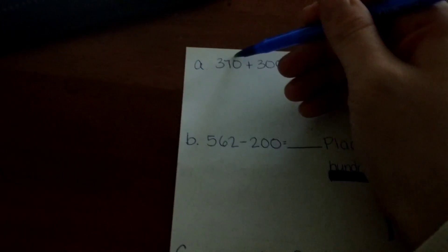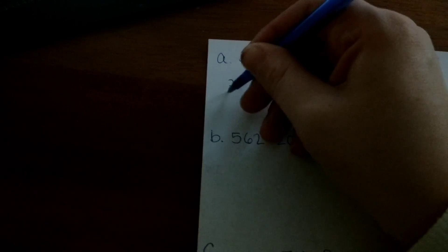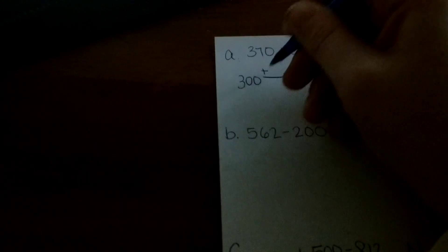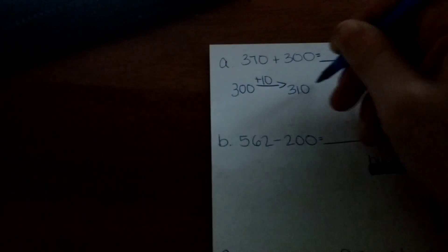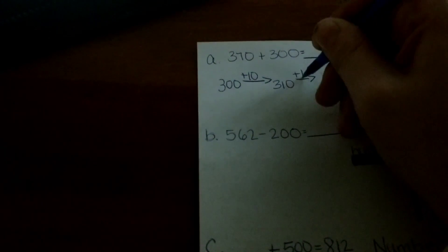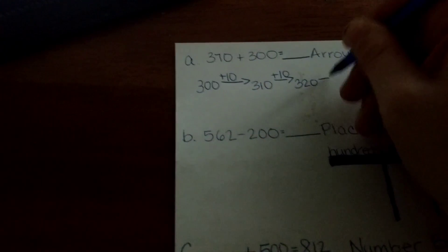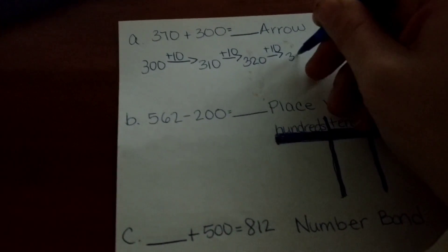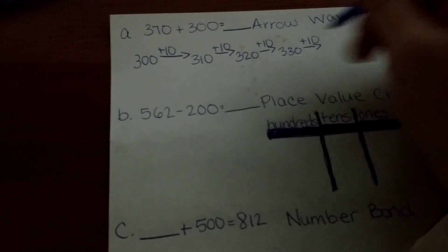We are adding 370 to 300. So if we start at 300, and we add 7 tens—there's 1 ten, that makes 310. We add another 10, that makes 320. We add another 10, that makes 330. We add another 10, now we are up to 4 tens, that makes 340.